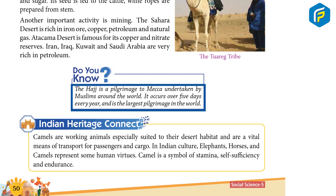Do you know? The Hajj is a pilgrimage to Mecca undertaken by Muslims around the world. It occurs over five days every year and is the largest pilgrimage in the world.